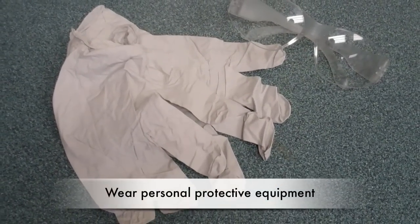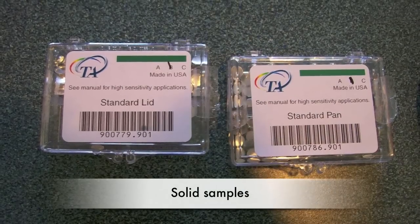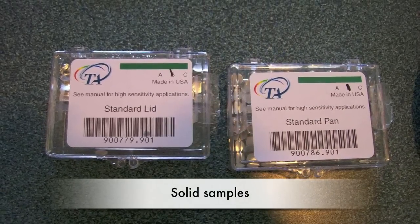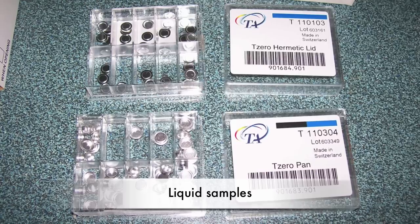Wear gloves and safety goggles when using this machine. The DSC can be used to test any kind of material. Solid samples use the flatter standard pan and lid, while liquid samples use the deeper hermetic pan and lid.